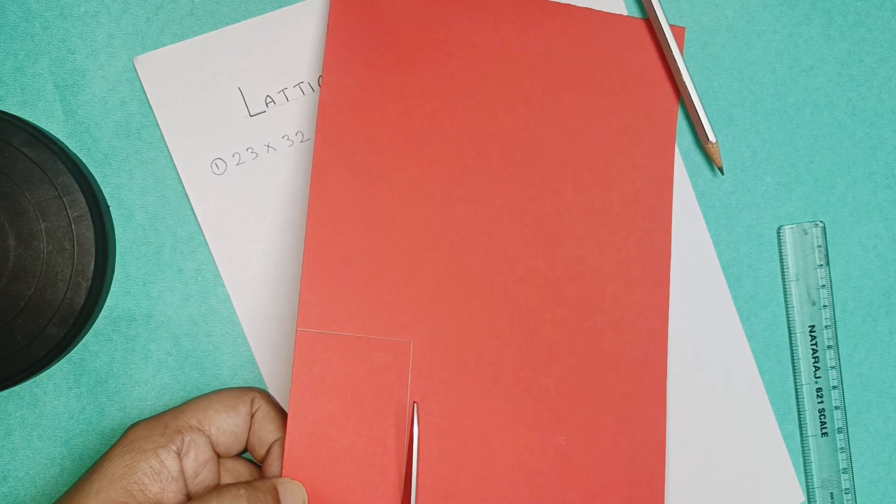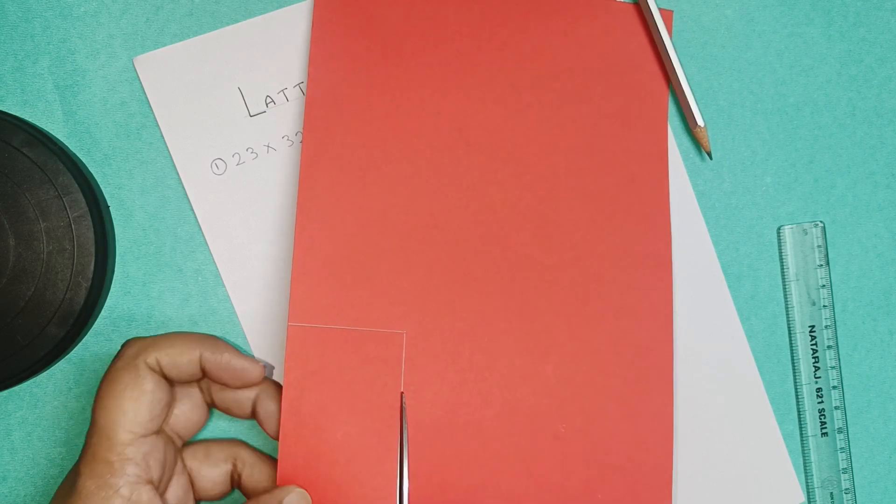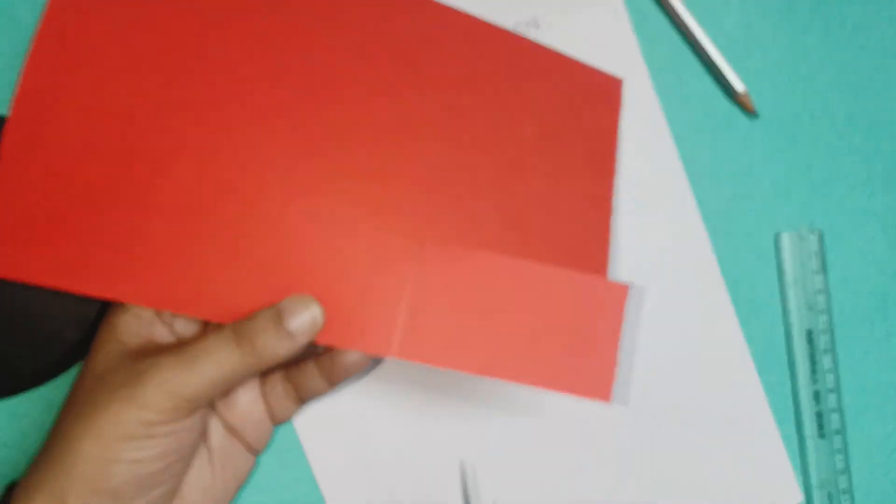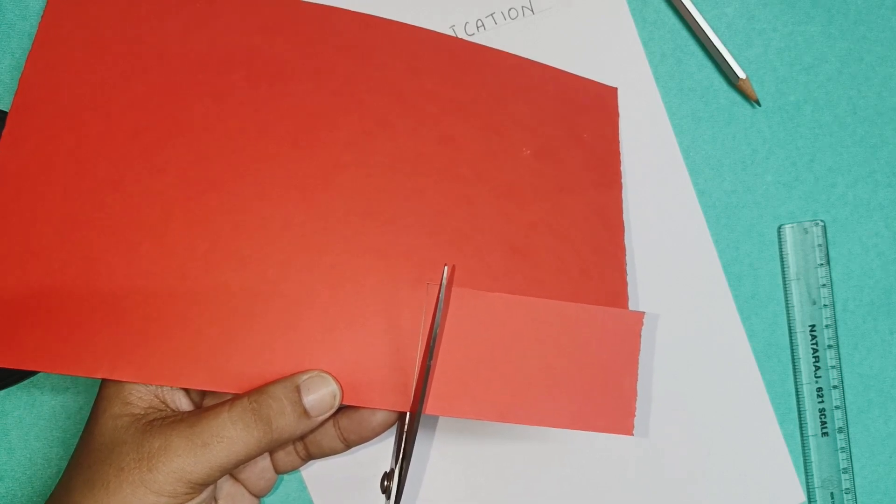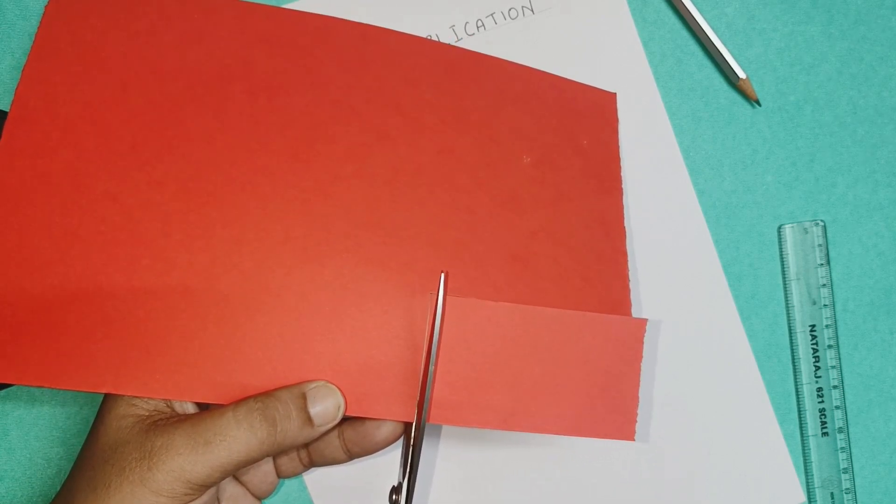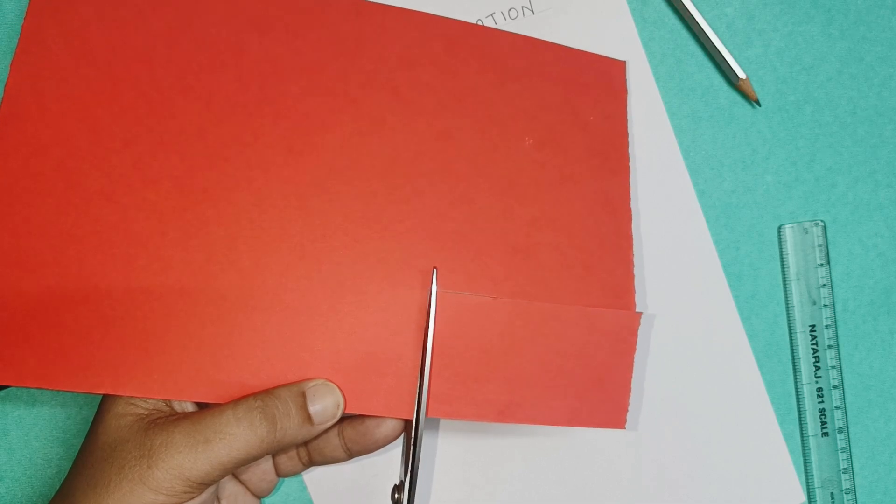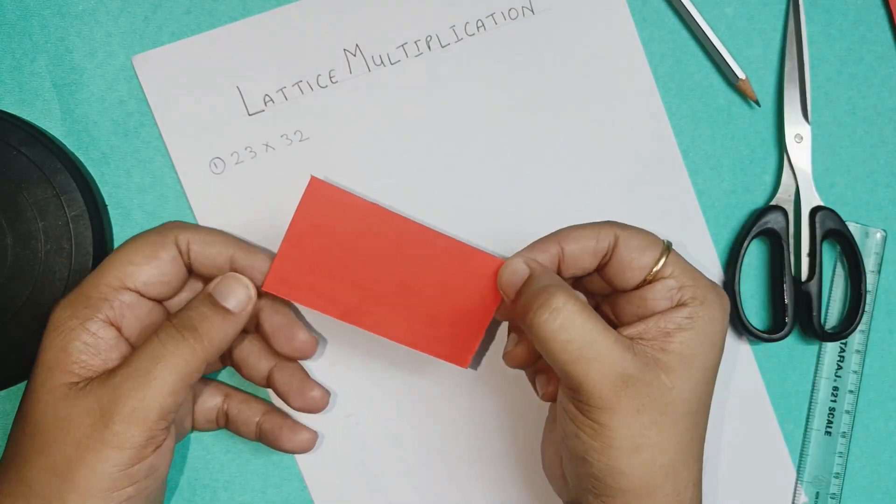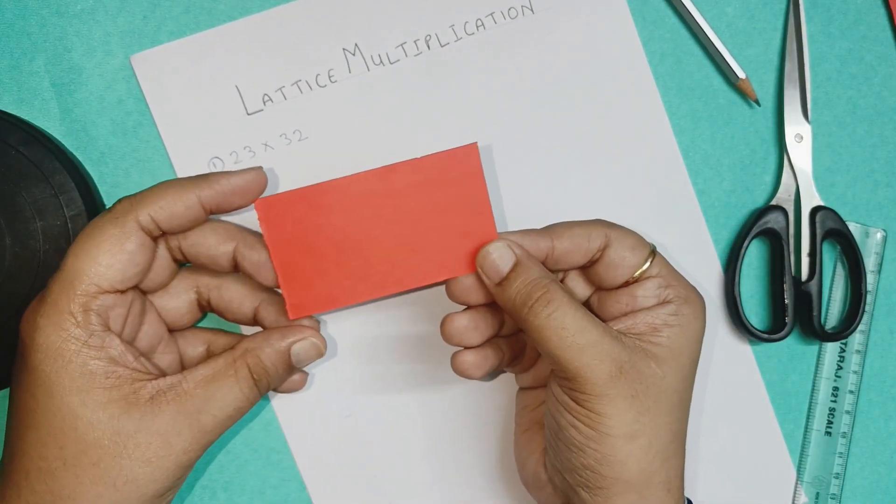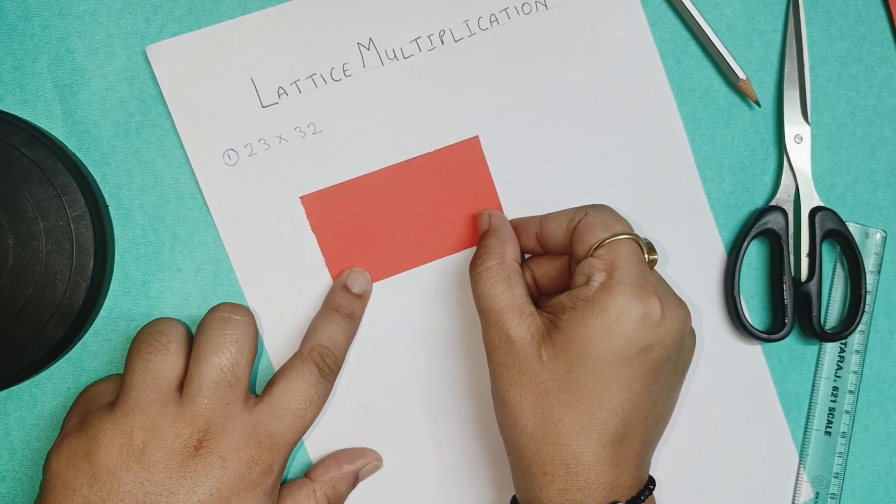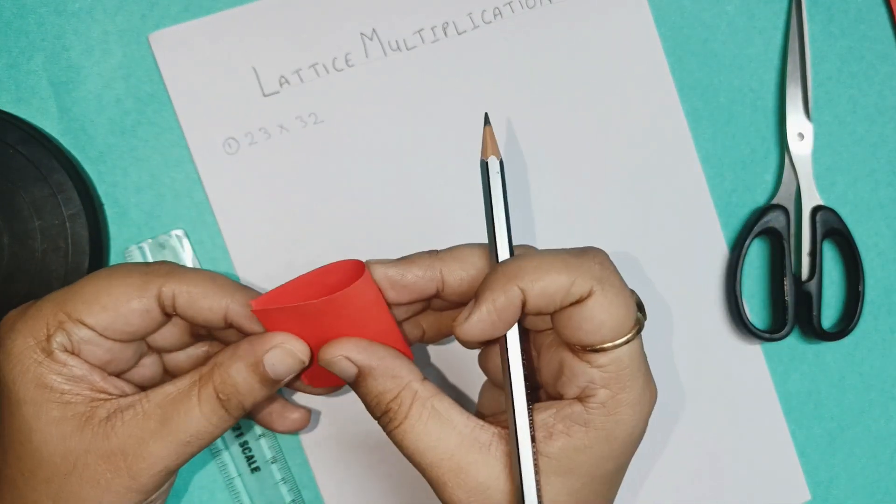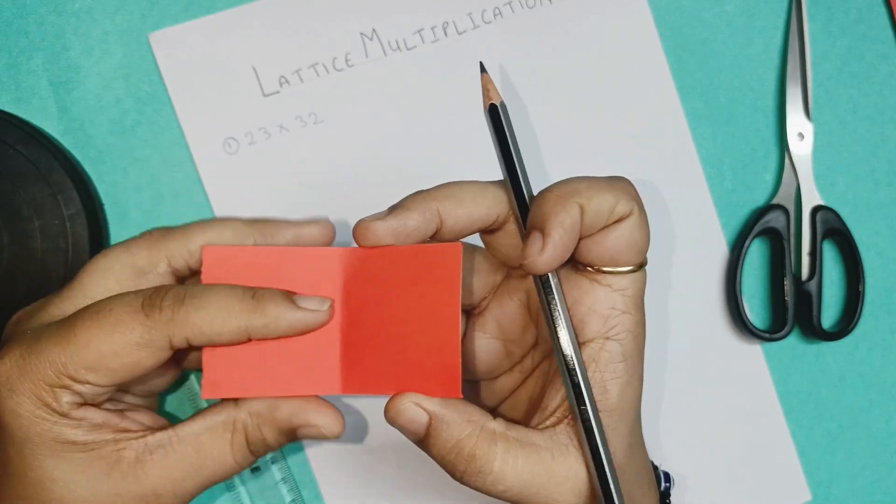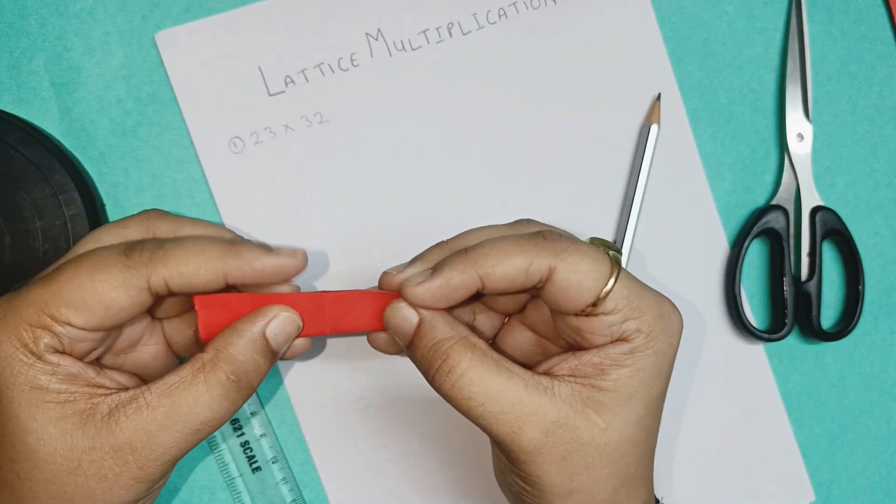Now use scissors to cut this rectangle out of this sheet. We are going to use this rectangle to solve this multiplication and we will paste it here. Now let us fold it like this and then open the sheet and fold it again like this. You have to fold it in both the directions.